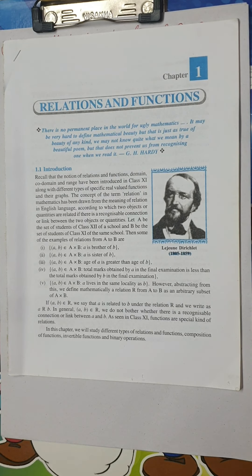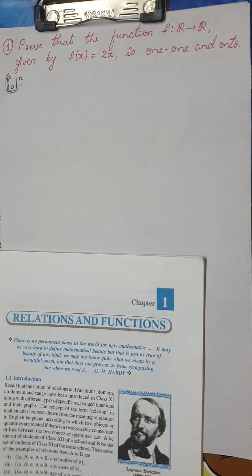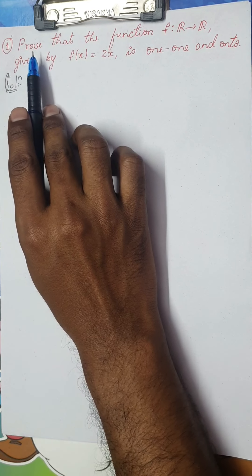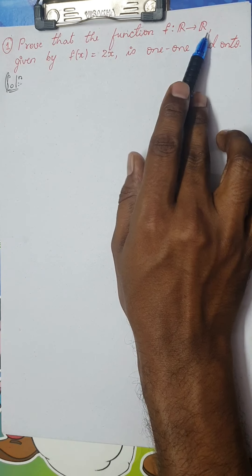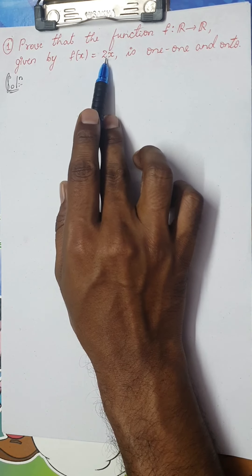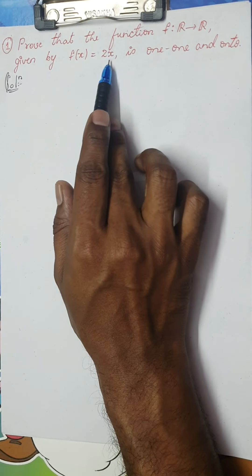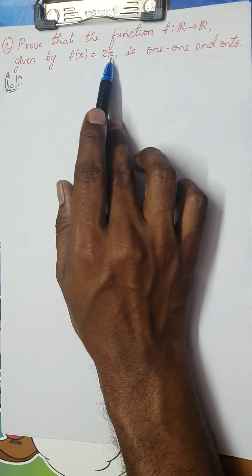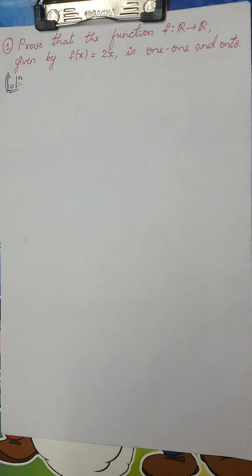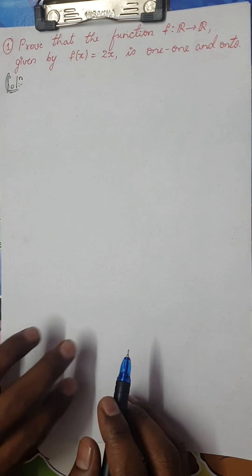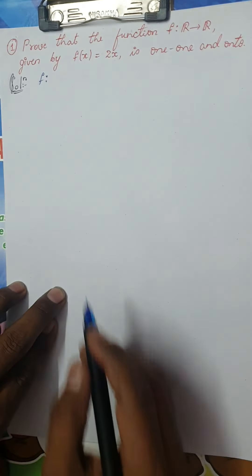I will not take much of your time now. We shall directly go into the first question for the session. Look at the question. The question states: Prove that the function f defined from R to R given by f(x) = 2x is 1-1 and onto. This is one of the easiest questions of all. This is a worked example in your second PUC textbook, but we shall work out how we can prove that it is 1-1 and onto.